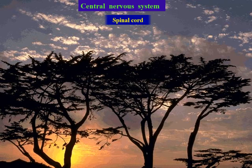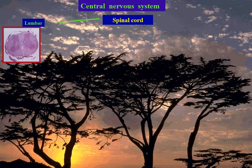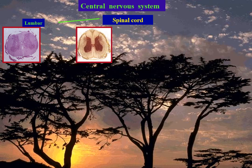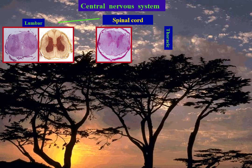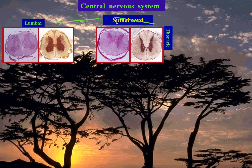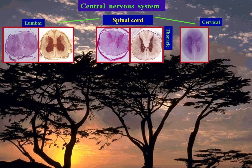Spinal cord — three levels are examined: lumbar level, thoracic level, and cervical level. Each is stained by hematoxylin and eosin and silver.